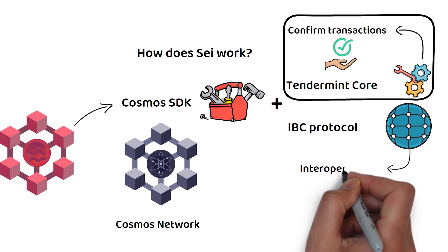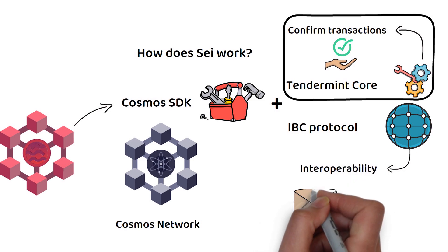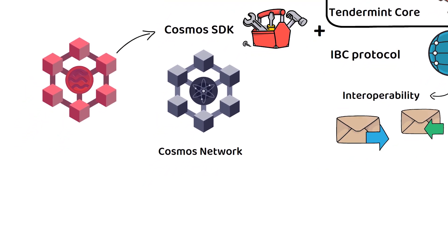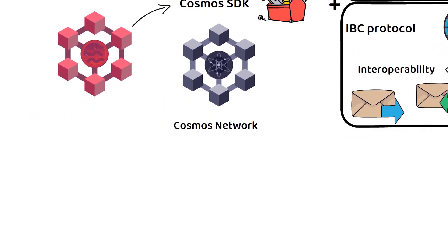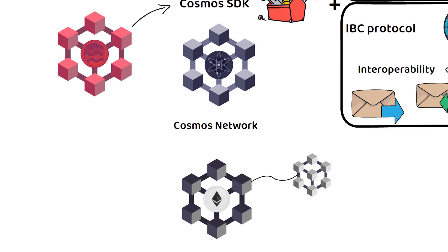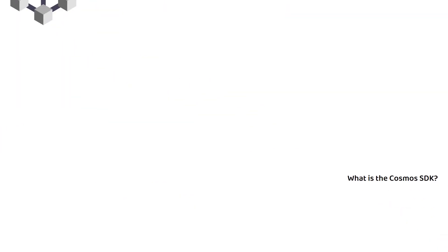However, unlike platforms built on blockchains like Ethereum, which become apps on the parent's blockchain, platforms built on the Cosmos network remain their own individual blockchains.